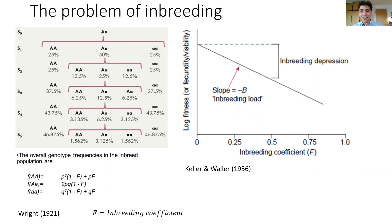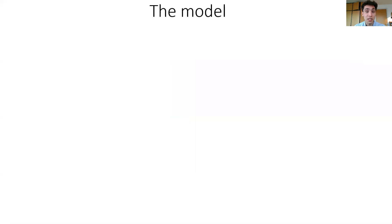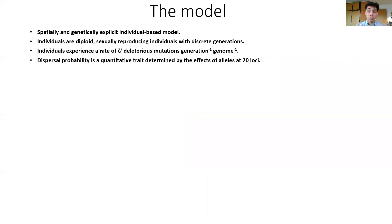I'm quite keen on studying how populations that are highly inbred have actually managed to survive for millions of generations despite these obstacles. And to study that, I use individual-based models. I'll just go over the main features of the model I've been using so far.